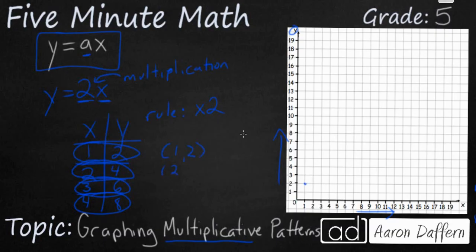Then our x is 2, y is 4. That is going to be over 2 and up 4. And then we are going to continue with 3, 6. And you see how we have a pattern here. It is going to be a straight line.